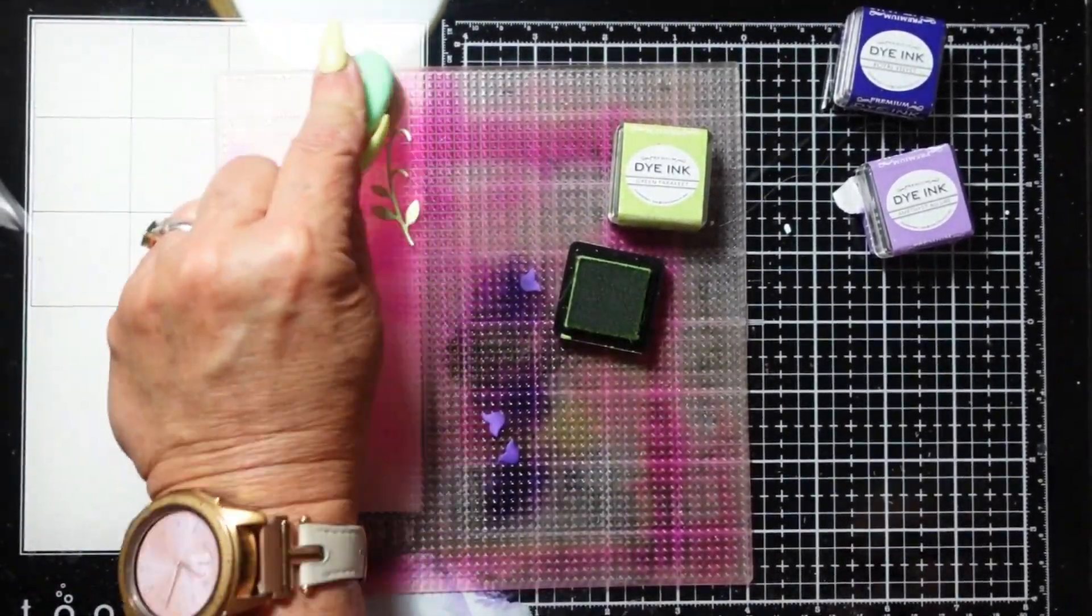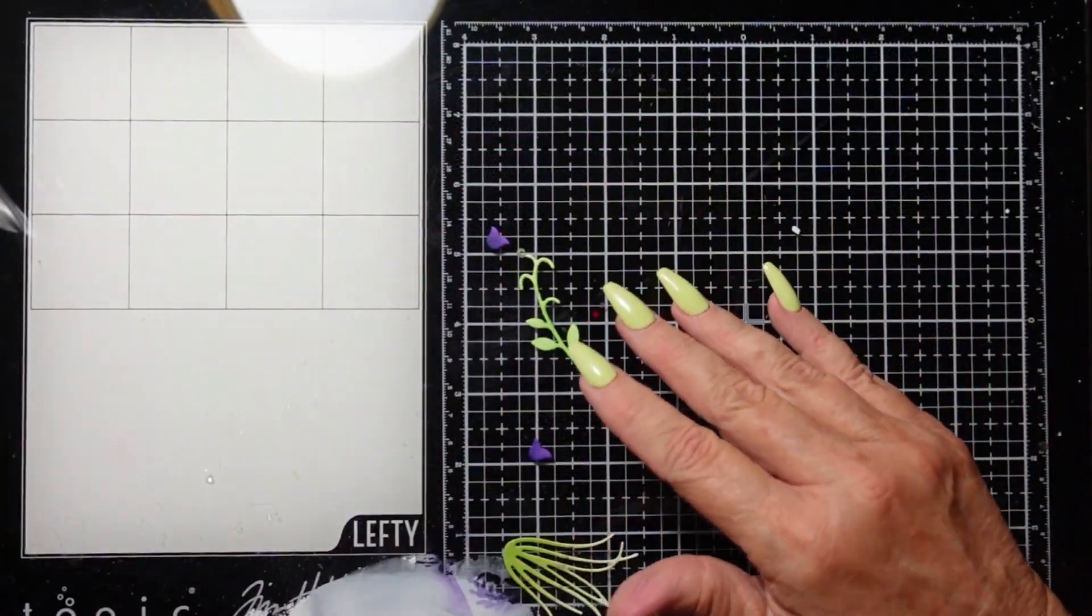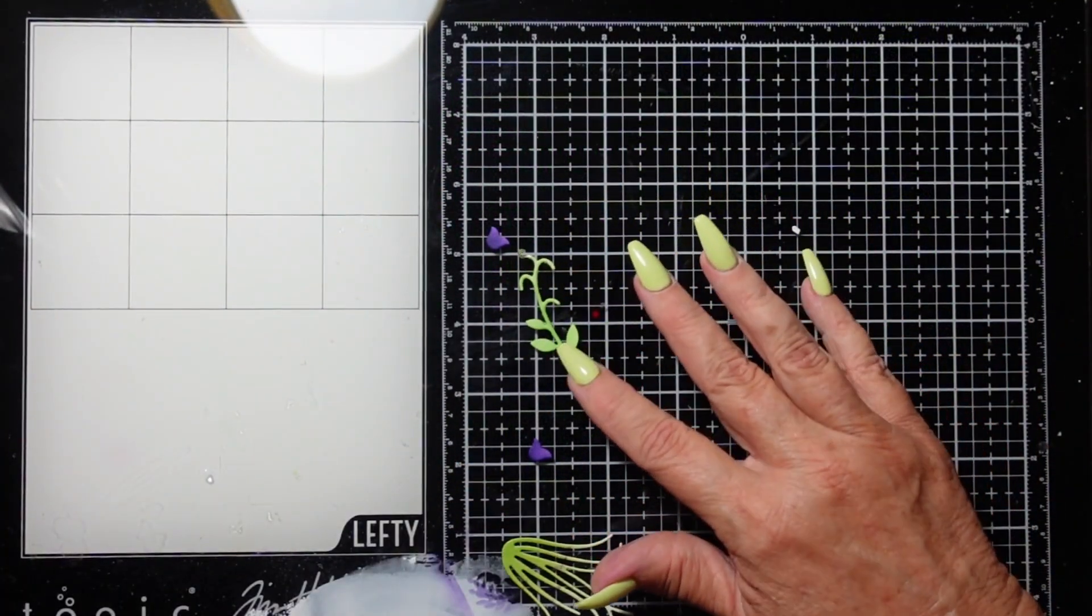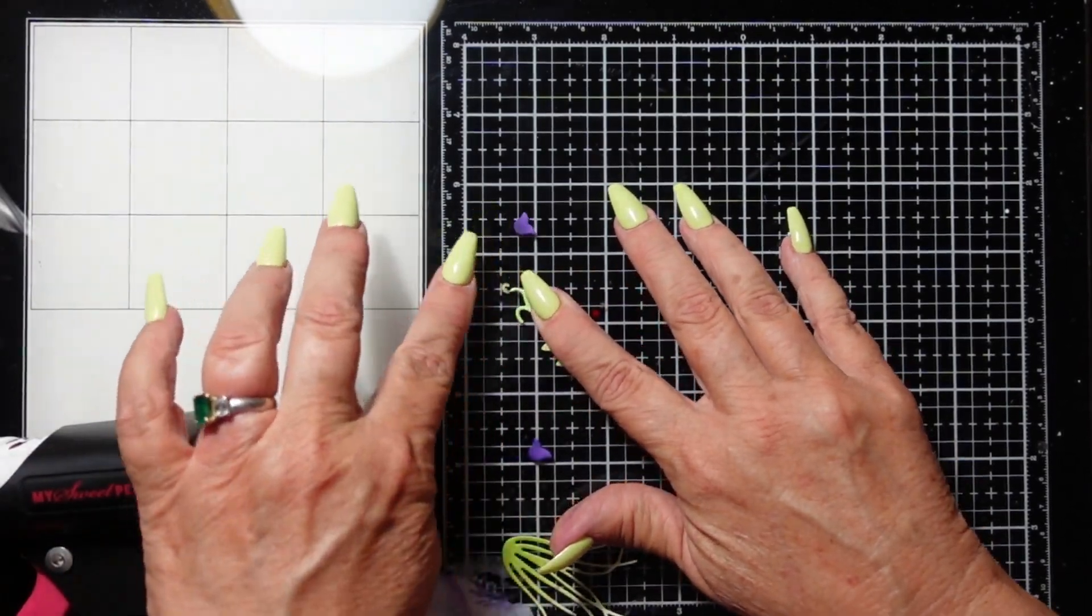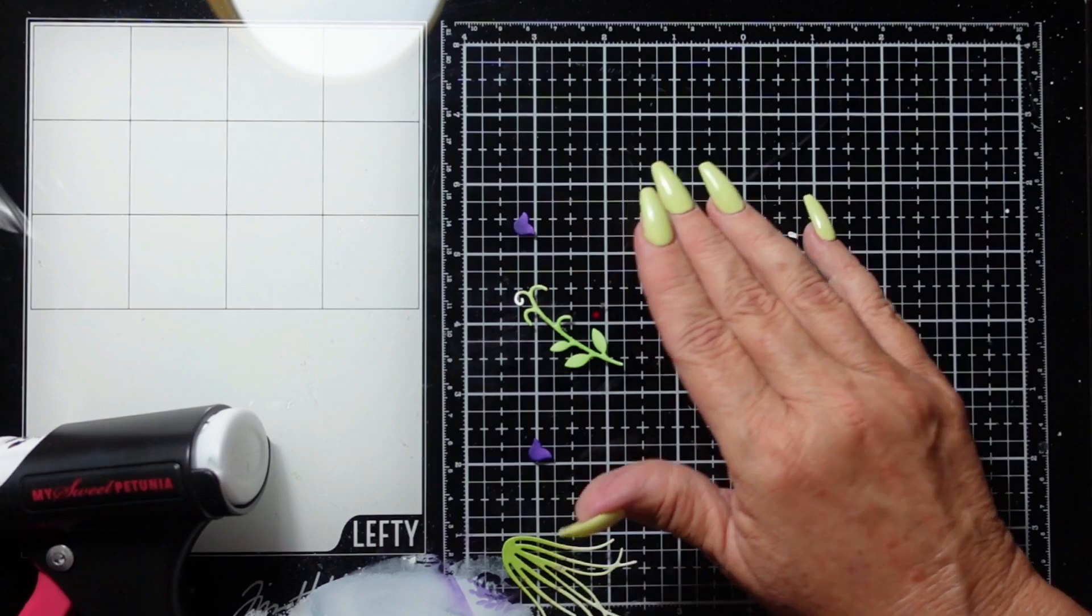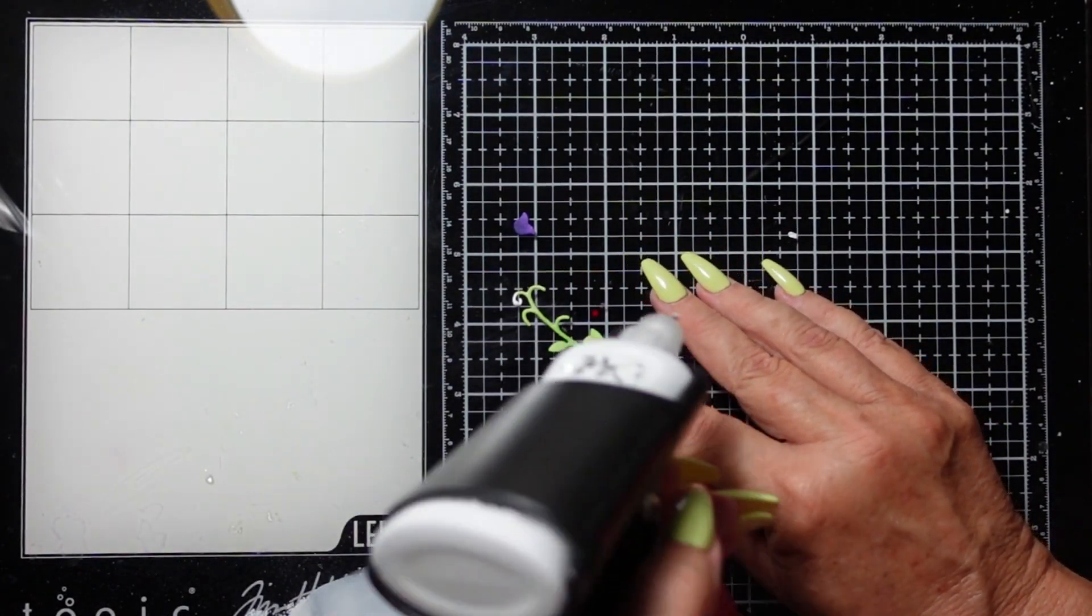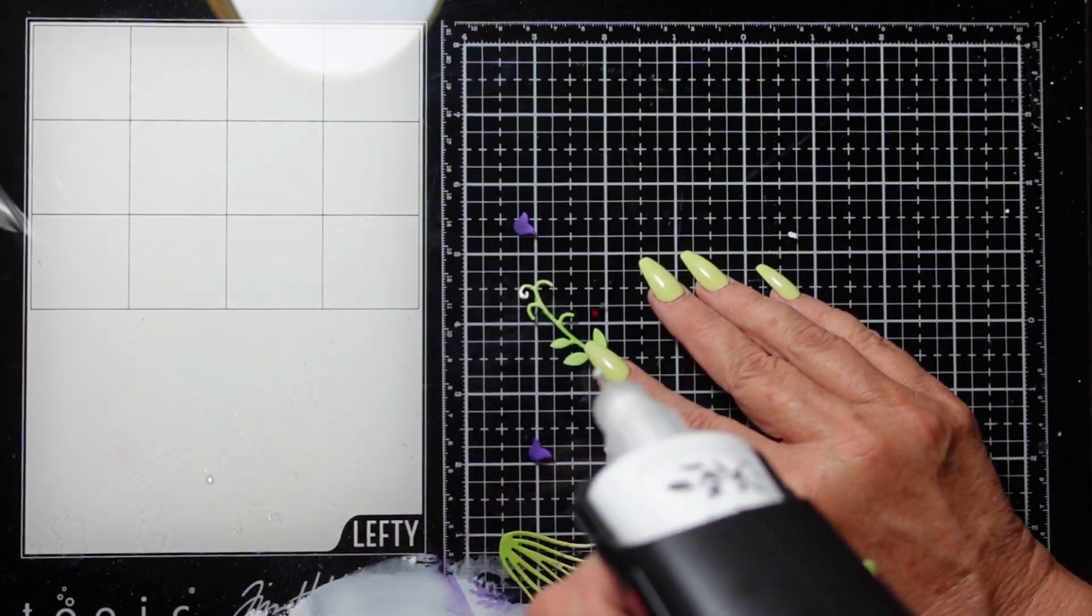For my card today, I picked out a flower that looks like a bluebell and a grass piece. For the bluebells, I used a light purple and a dark purple, and for the foliage I used green parakeet. These are from Paper Trey Ink. On the grass, I used mint julep.